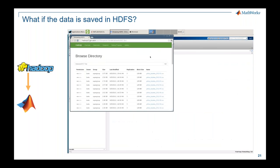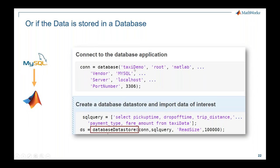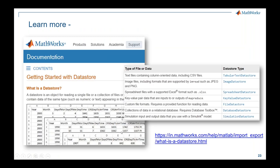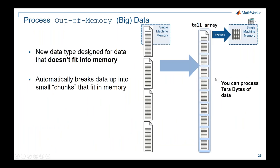For completeness, if data is on a SQL database, the process is the same — make a connection to the database and use a database datastore. Datastore is going to be your good friend. MATLAB documentation covers what datastore is, how to get started, and what types of data it supports. In summary, MATLAB can access data from servers, databases, or directly from hardware sensors, supporting both business and engineering data.